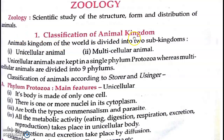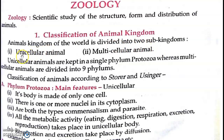Now come to the classification of animal kingdom. The animal kingdom of the world is divided into two sub-kingdoms. The animal kingdom is very large, so it has been divided into two sub-kingdoms.